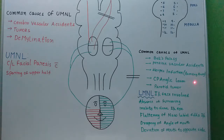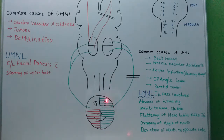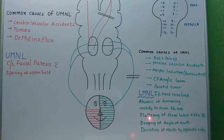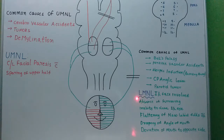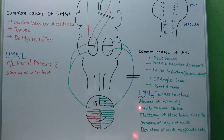In lower motor neuron lesions, the ipsilateral face is involved. There will be absence of frowning, inability to close the ipsilateral eye, flattening of the nasolabial fold ipsilaterally, drooping of the angle of the mouth on the ipsilateral side, and deviation of the mouth to the opposite side.